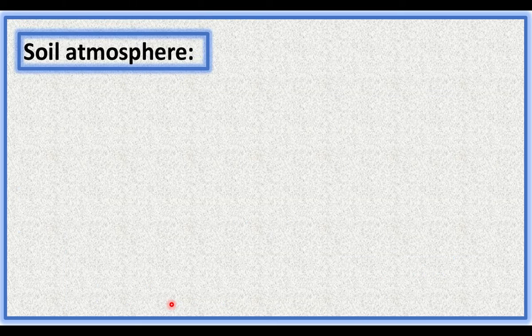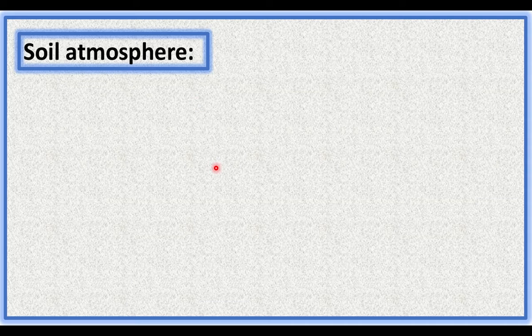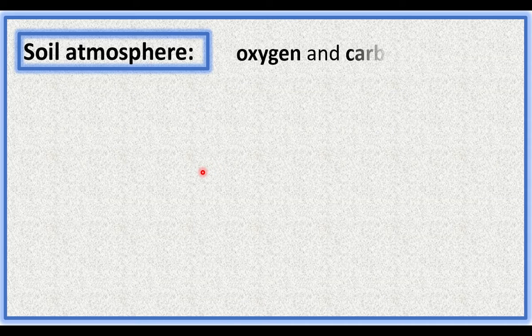Soil atmosphere is the soil air. Roots need oxygen for respiration, which is taken from the soil atmosphere. In between the soil particles, the space contains oxygen and carbon dioxide.